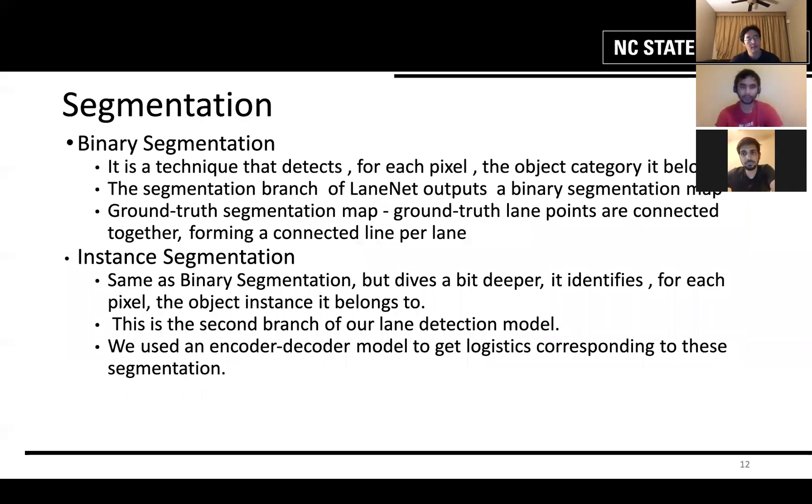So this instance segmentation is the second branch of our lane detection model. And we have used the encoder decoder model to get the logistics corresponding to the segmentation. What I mean by that is we're using the encoder to create a CNN convolutional input. Then we are using the decoder and what decoder does is basically uses this encoder and it creates a map of pixels for each of the lanes which is further used to identify the lanes in a particular image.